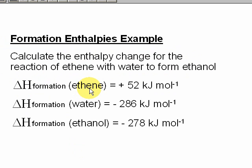The formation enthalpy of ethene is the energy change going from the elements — carbon and hydrogen — to ethene. The formation enthalpy of water would be going from elemental hydrogen and elemental oxygen to water. And the formation enthalpy of ethanol would be going from elemental carbon, hydrogen, and oxygen to ethanol itself.